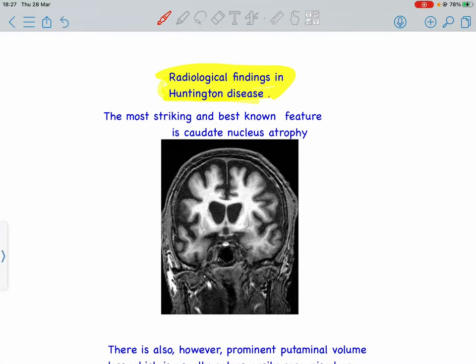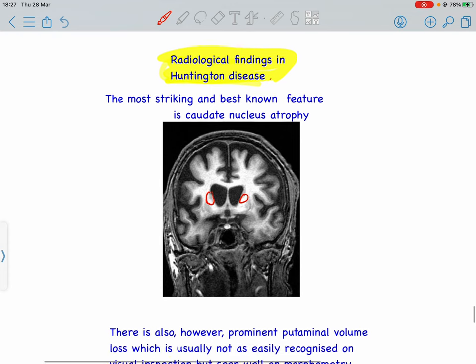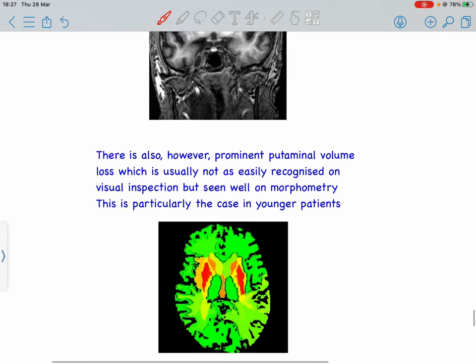Radiological findings in Huntington's disease: the most striking and best known feature is caudate nucleus atrophy. This can be appreciated in the MRI, showing bilateral caudate nucleus atrophy, which can also be seen on morphometry.